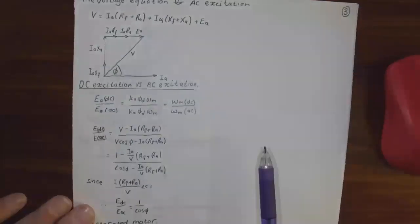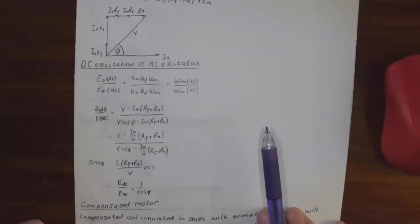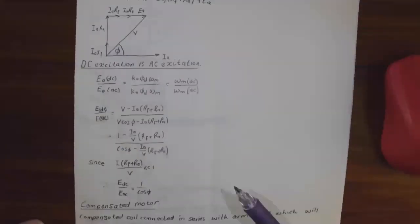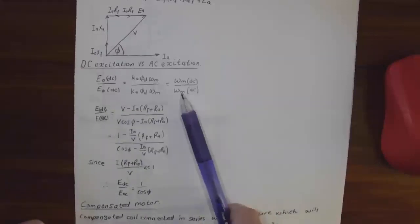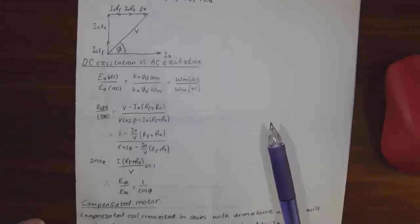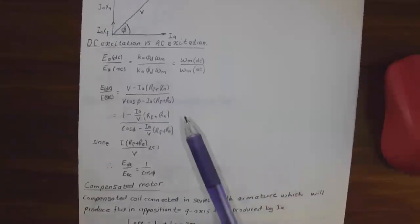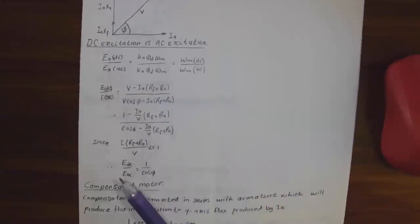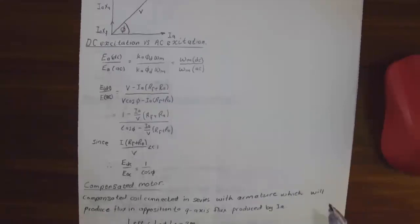If we look at DC excitation versus AC, we get E_dc over E_ac is equal to omega m DC over omega m AC. Then for the compensations you get at the end E_dc over E_ac is one over plus y.